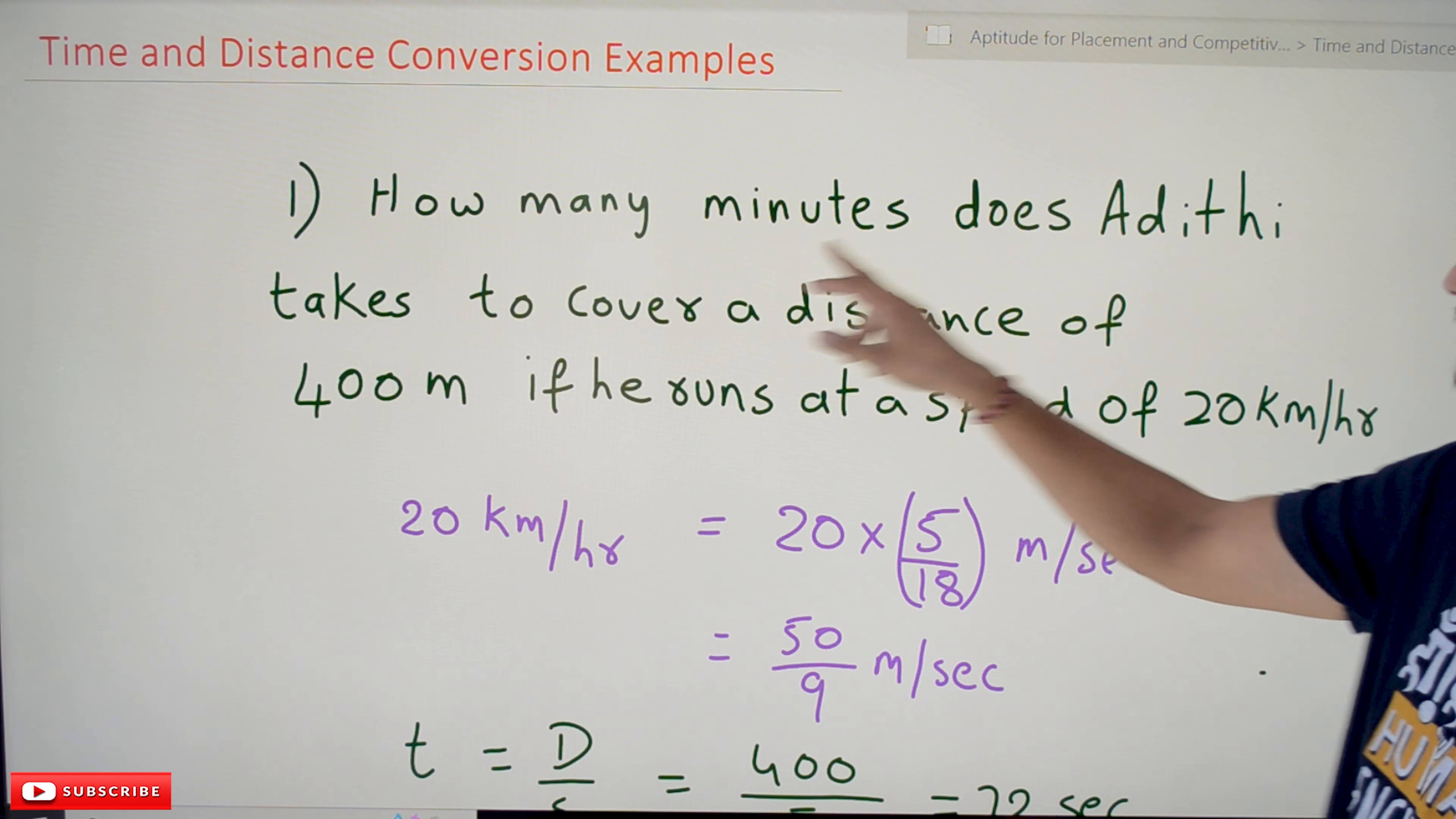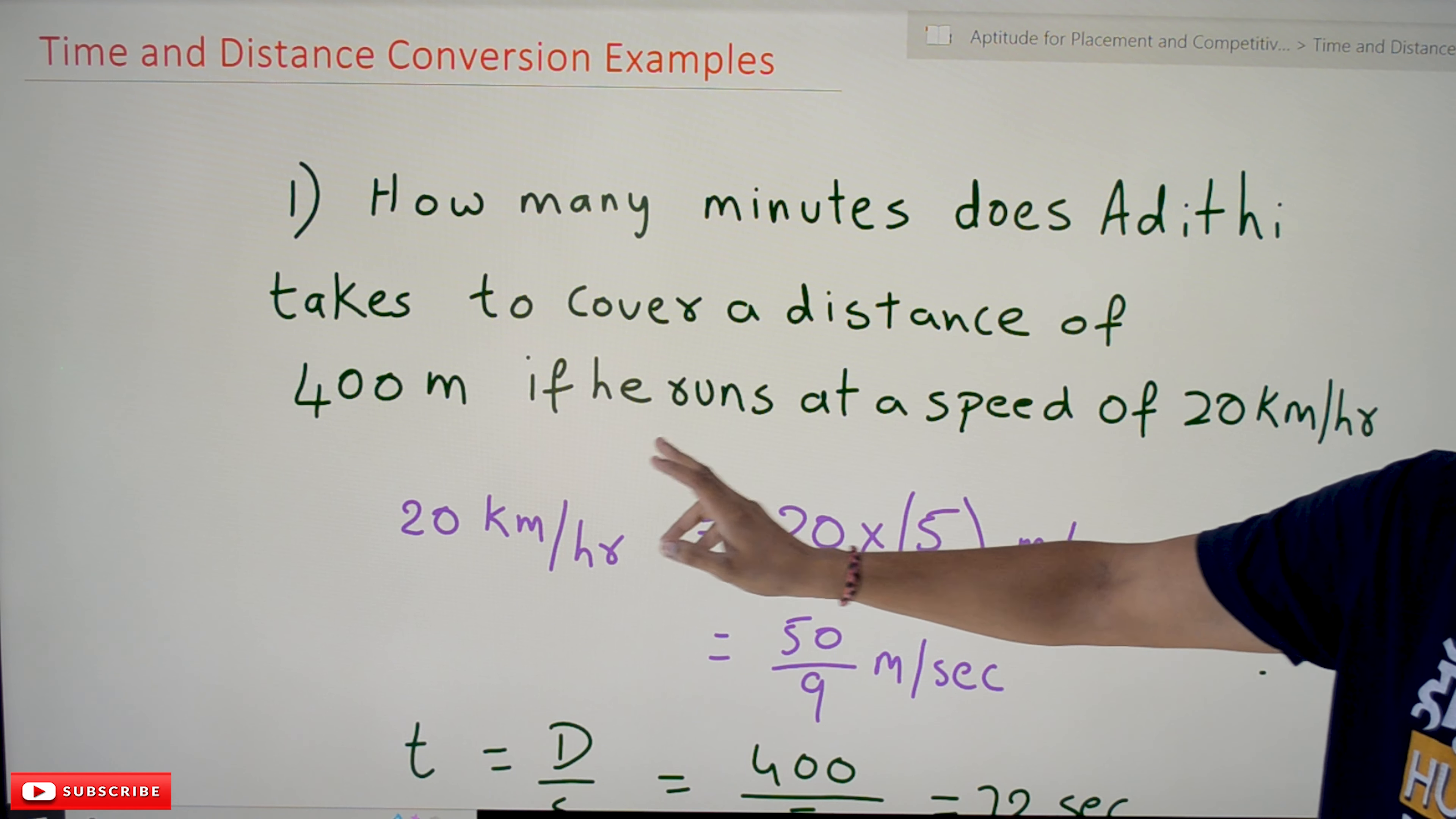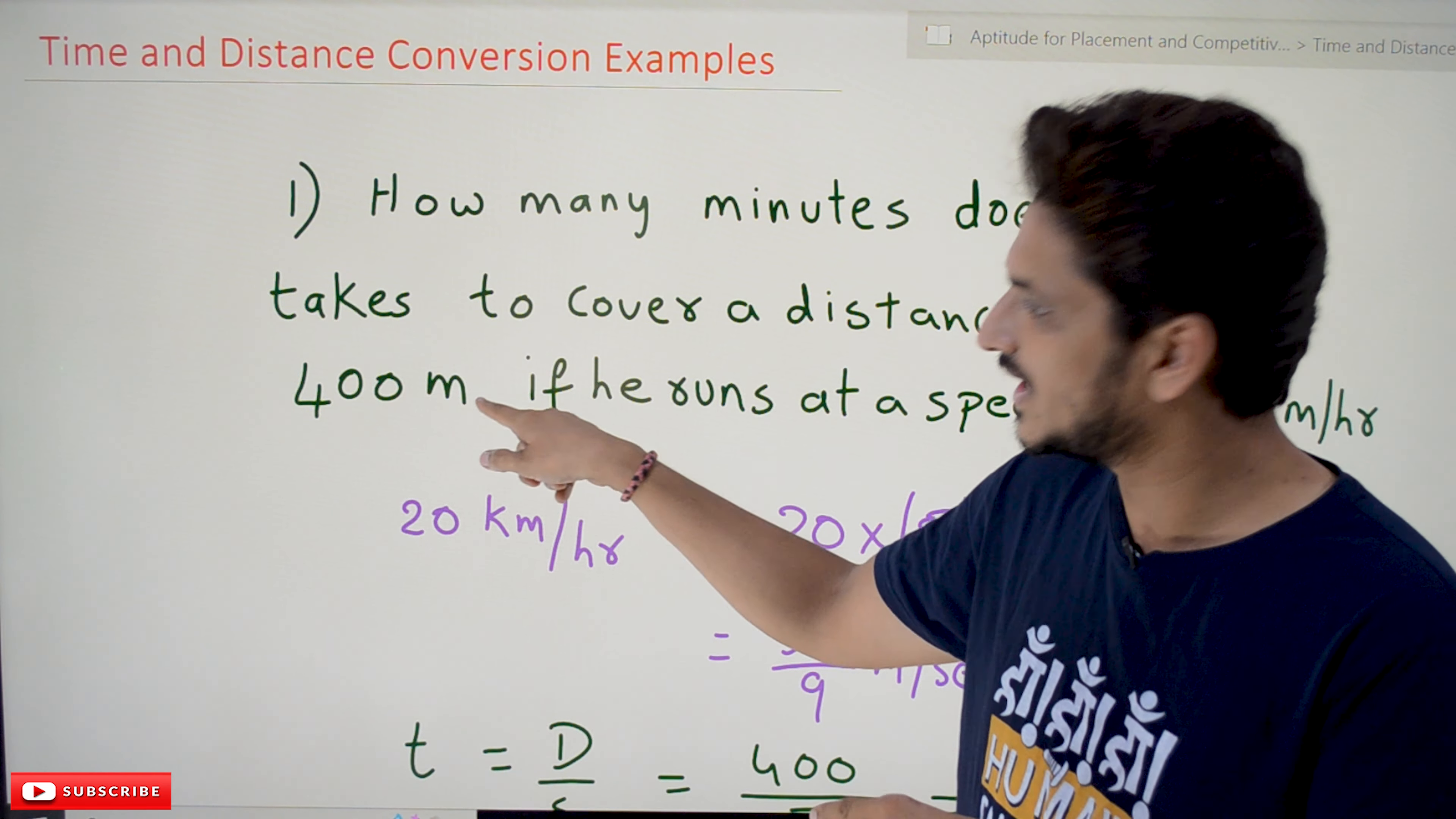Coming to today's class: How many minutes does Aditi take to cover a distance of 400 meters if he runs at a speed of 20 kilometers per hour? Speed is provided in 20 kilometers per hour but distance is provided in meters.